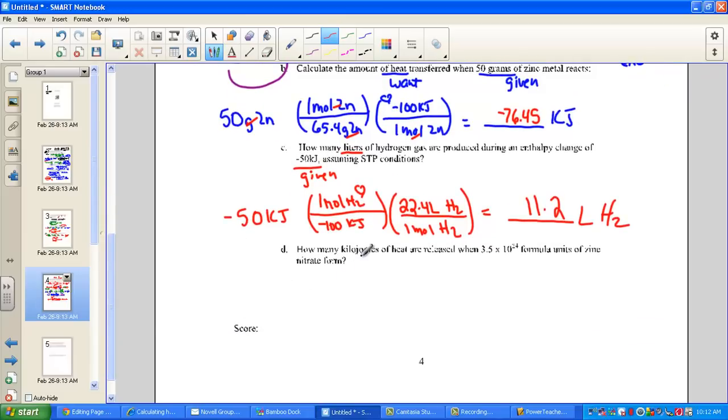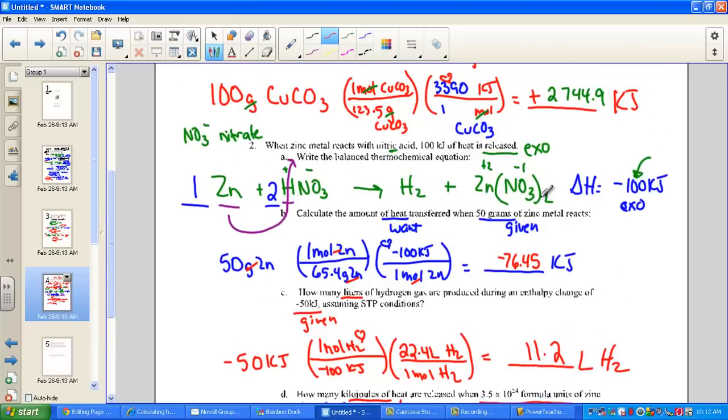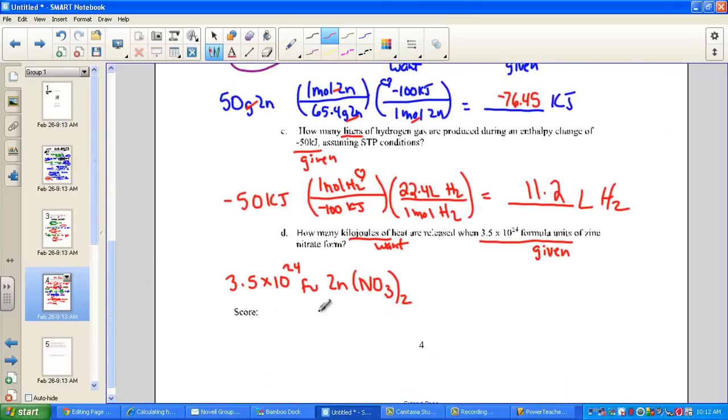And one more. How many KJs of heat are released when 3.5 times 10 to the 24th formula units of zinc nitrate form. Zinc nitrate formed. Here's our given. The quantity of 3.5 times 10 to the 24th formula units of zinc nitrate. This is the zinc nitrate. This is our given quantity. We want to know KJs. We'll need to divide, ratio, and stop.